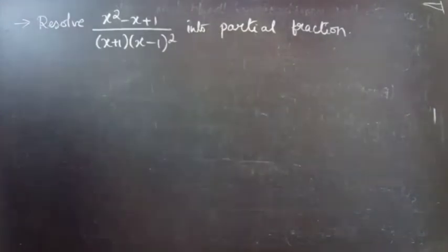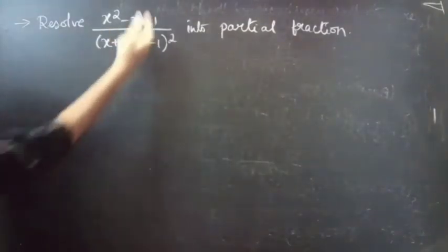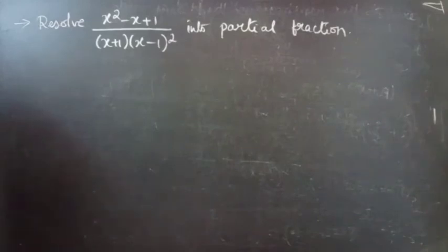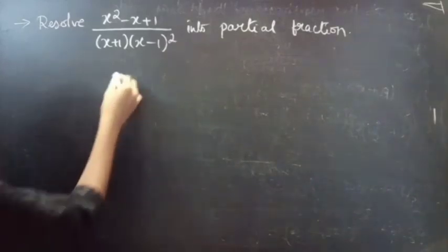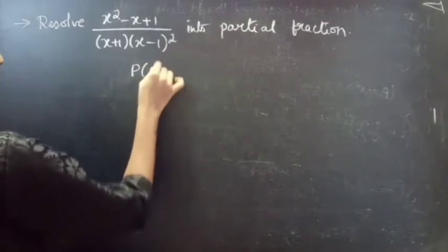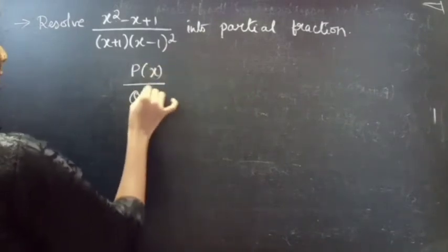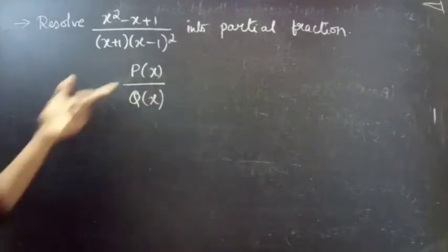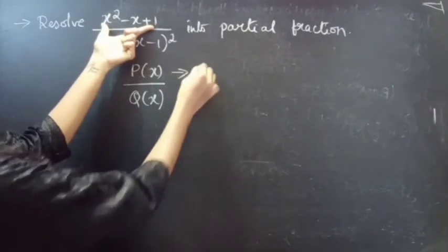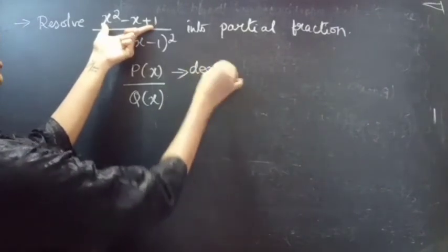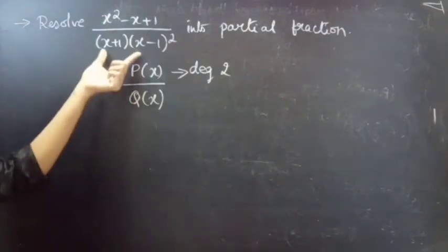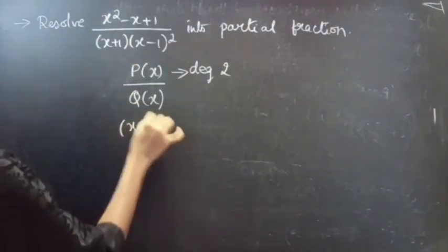We are given a fraction and we have to check whether it is a proper fraction or an improper fraction. Let us consider the fraction as P(x) by Q(x). Here P(x) is x² - x + 1, and it is clear that the degree of P(x) is 2.